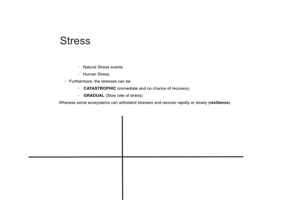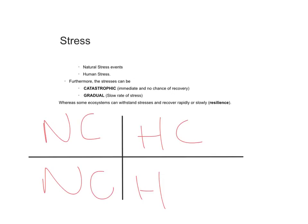Stressors fall into two categories: natural stress events and human stress events. Furthermore, stressors can be catastrophic — occurring very quickly — or gradual, occurring over a slow rate of time. This gives us four combinations: natural catastrophic, natural gradual, human catastrophic, and human gradual, each with sample studies we can examine.